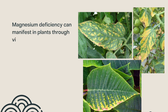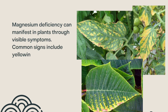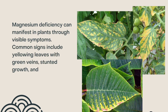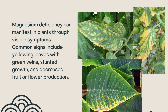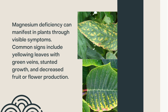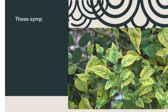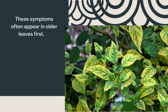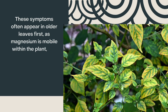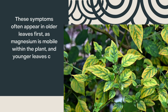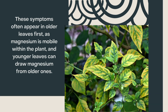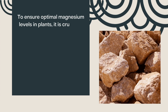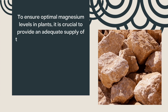Magnesium deficiency can manifest in plants through visible symptoms. Common signs include yellowing leaves with green veins, stunted growth, and decreased fruit or flower production. These symptoms often appear in older leaves first, as magnesium is mobile within the plant, and younger leaves can draw magnesium from older ones.